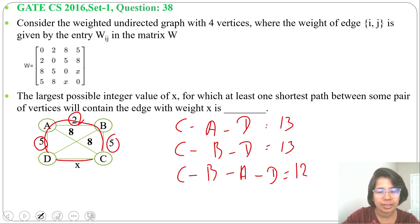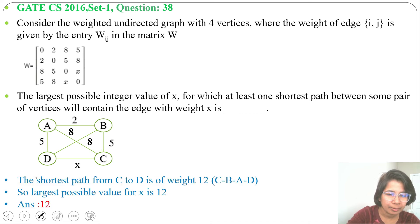So 12 can be the largest possible integer value of X that at least one shortest path between some pair of vertices will contain this edge. So if X value will be 12, either you can choose path C to D or you can choose path C to B, then B to A and A to D.